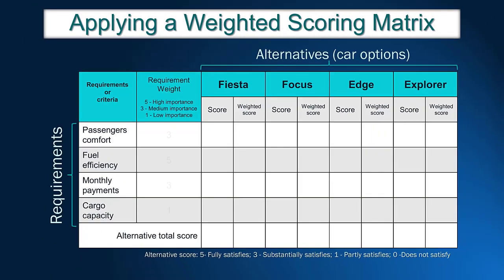Let's make some assumptions for John. John uses his car every day to work, so the vehicle must be fuel efficient. Therefore, the requirement of fuel efficiency receives weight 5. John considers that cargo capacity is not that important and gave weight 1 for this requirement. The remaining requirements receive intermediate weights ranging from 2 to 4. In this example, passenger comfort and monthly payments are graded as 3.